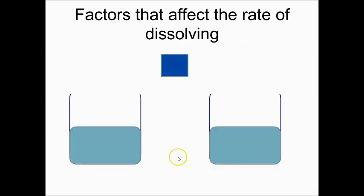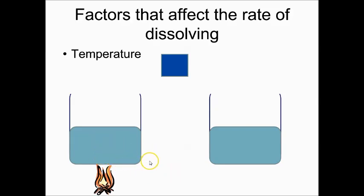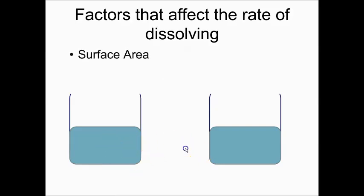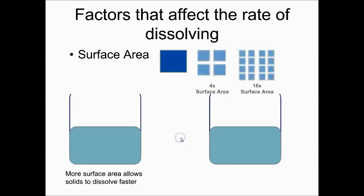There are several factors that affect the rate of dissolving: surface area, temperature, and stirring. If you heat water up, it's going to be able to dissolve more — hot water dissolves more than cold water. Regarding surface area: a huge chunk of sugar or salt put into water won't dissolve very fast. But if that big clump is broken up into tiny, fine pieces, it dissolves really easily. The more surface area there is, the more access the water molecules have to the ions in the crystal. More surface area allows solids to dissolve faster.